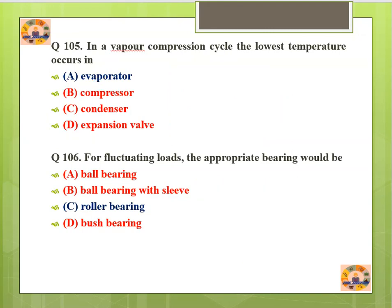Question number 106: For fluctuating loads, the appropriate bearing would be a needle roller bearing. Among the given options, roller bearing is the correct answer. This is all for today — in the next set we will discuss other questions. Please subscribe to our channel. Thank you.